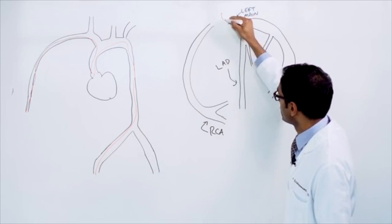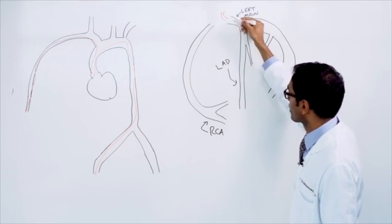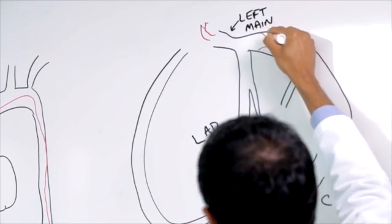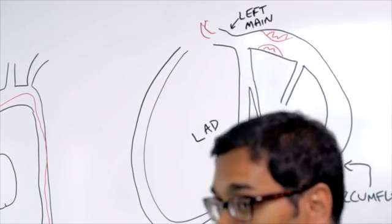The way we do the procedure is when we bring the catheter up to the heart artery and we find that there's a narrowing, let's say in this case, in the circumflex coronary artery.